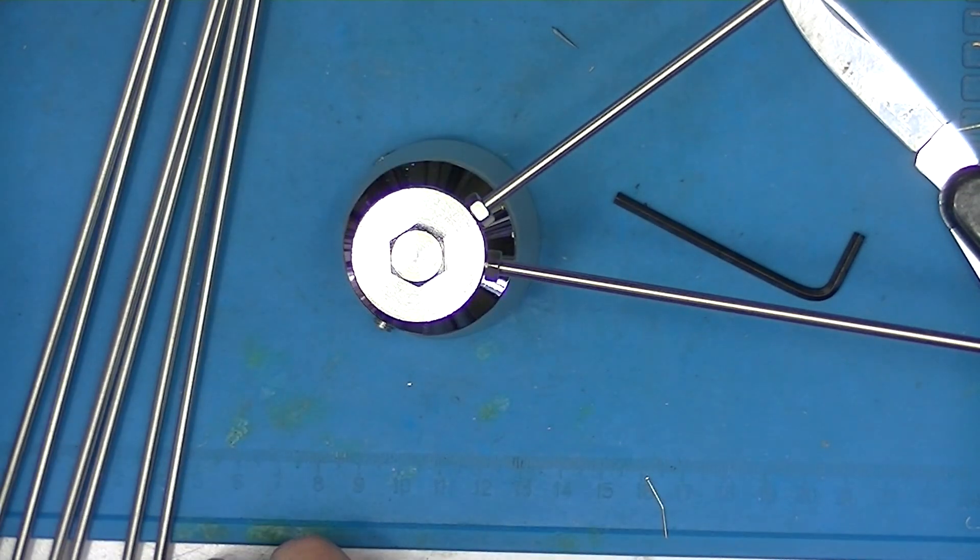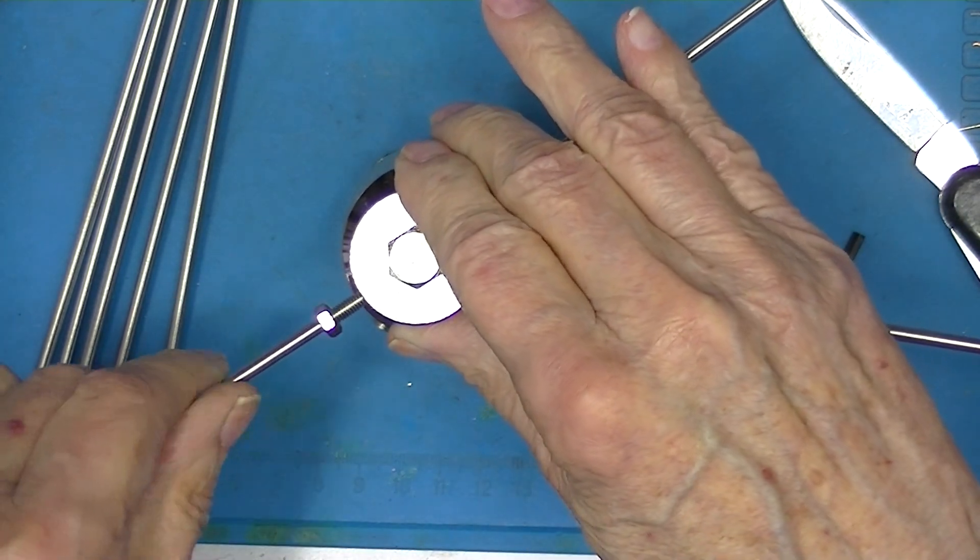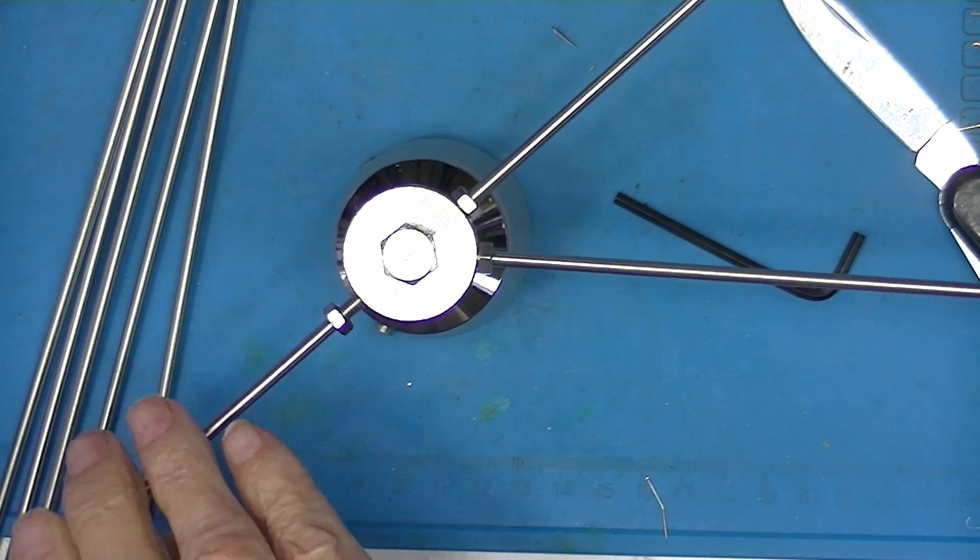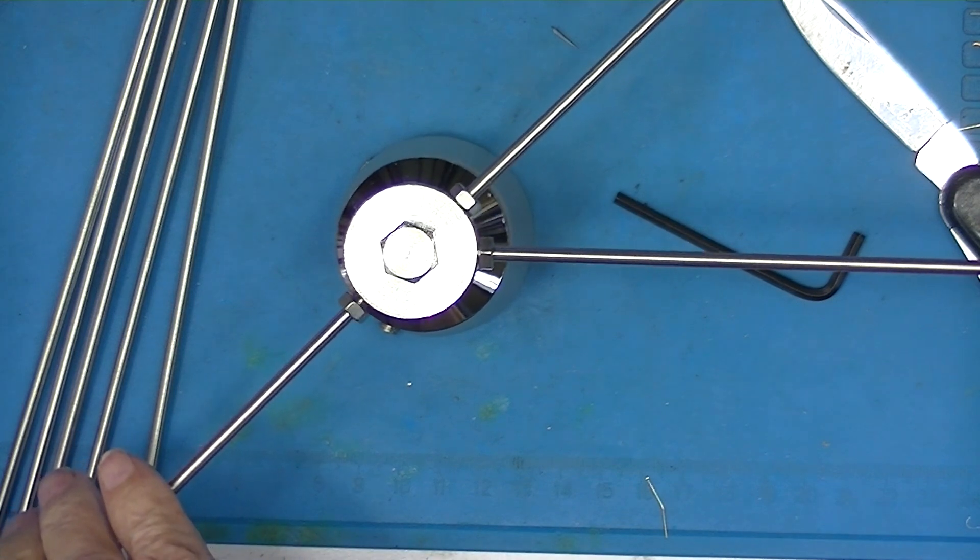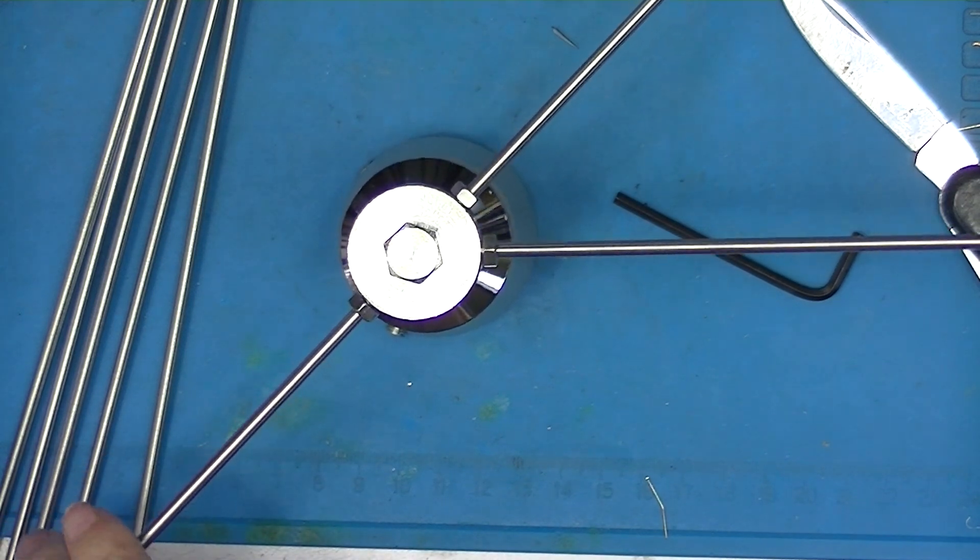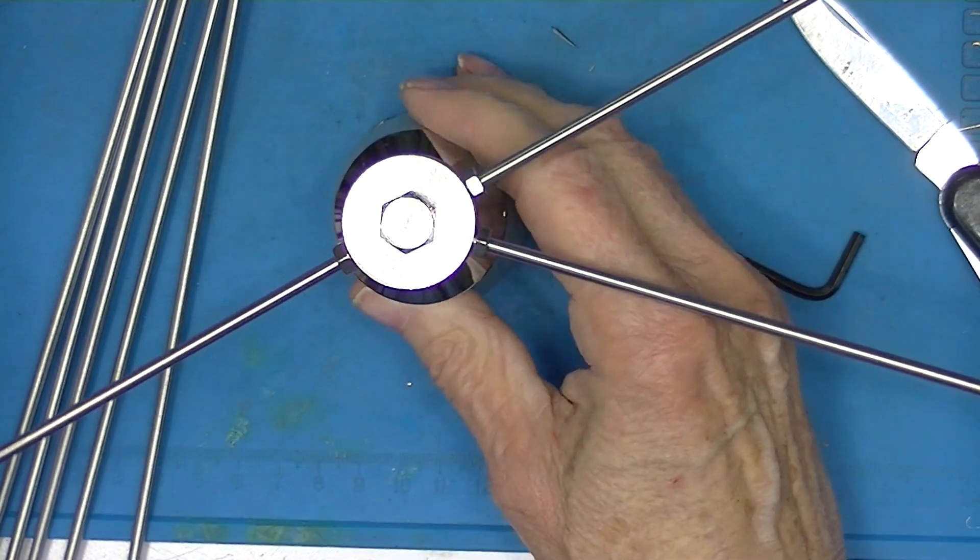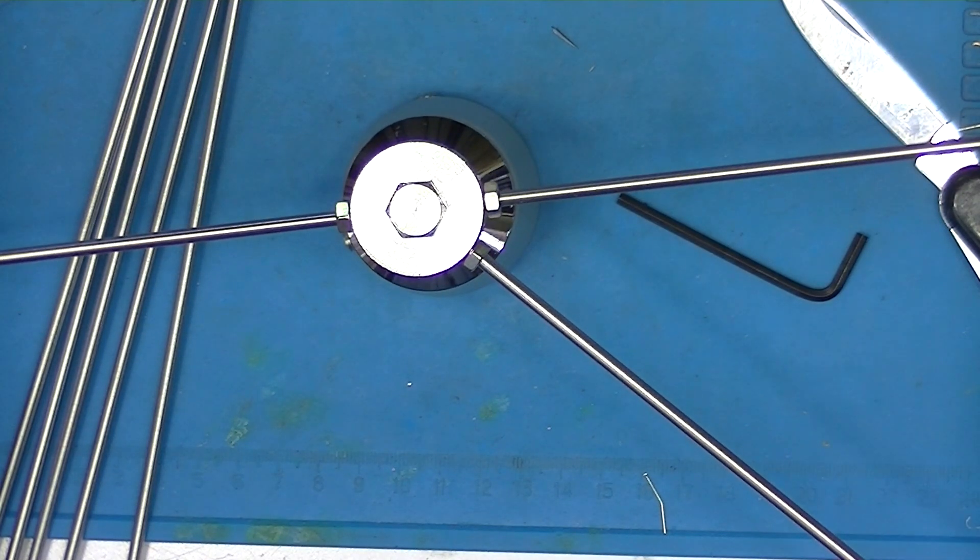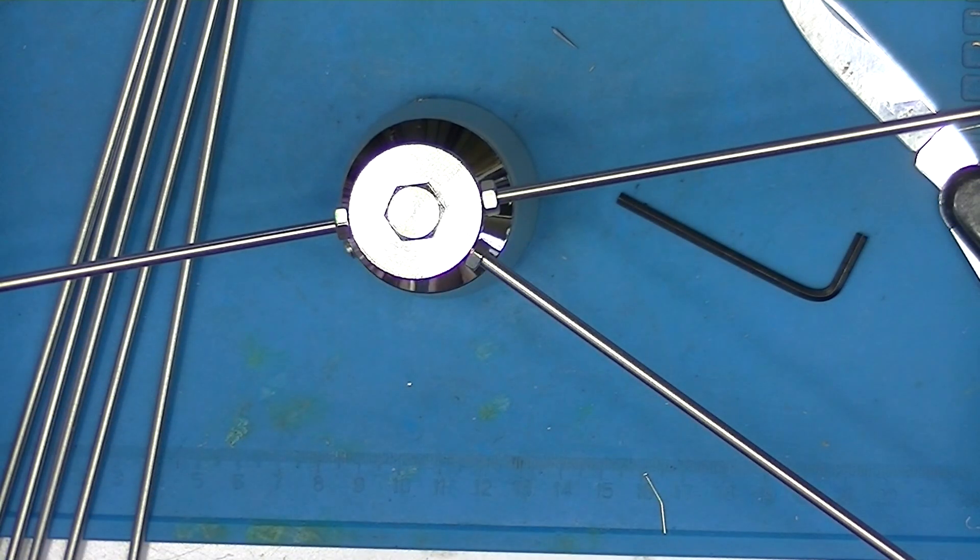You get the idea. It will go the whole way around and this will end up with 8 of these, giving a total overall diameter of 23 inches.